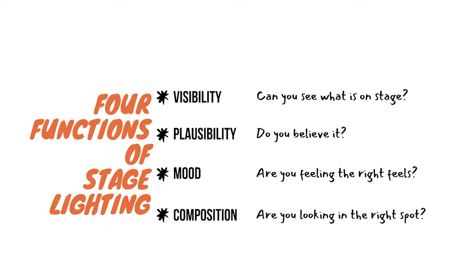The third function of stage lighting is to set the mood. This function determines whether or not the audience is feeling what they're supposed to be feeling in response to the action on stage. Does the lighting help reinforce that mood? And finally, stage lighting is in charge of composition — directing the audience's eyes to certain areas of the stage and focusing their attention on certain parts of the action. The way that light and shadow are arranged on stage is what is known as composition.